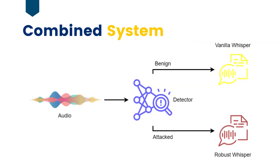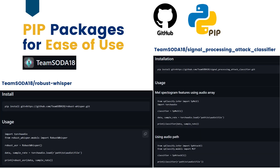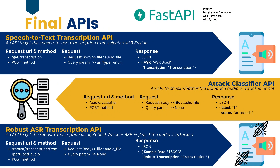We implemented the combined system as a web application. First, we created pip packages for the attack classifier and the robust system model for ease of use and to support future research. Using the pip packages we created, we developed three API services using FastAPI.